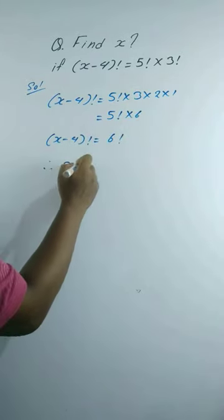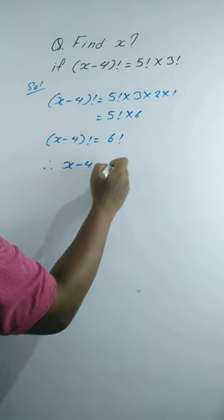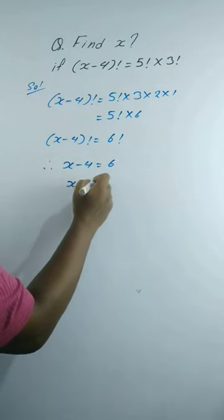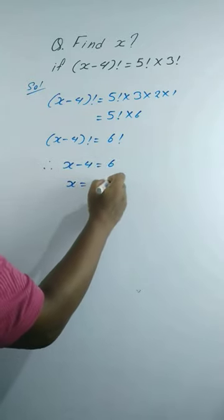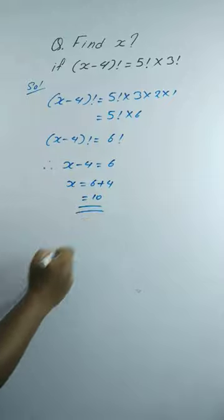Therefore, x minus 4 equals 6. This gives x equals 6 plus 4, which equals 10. This is our solution.